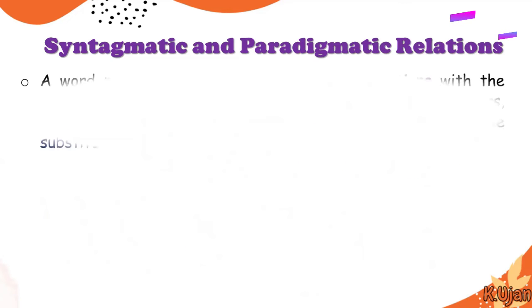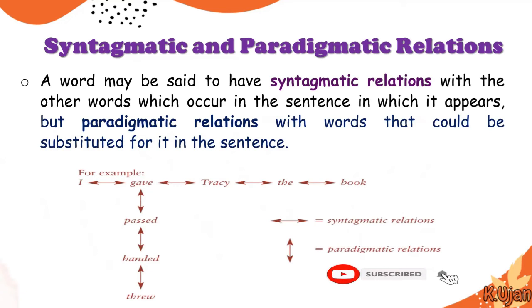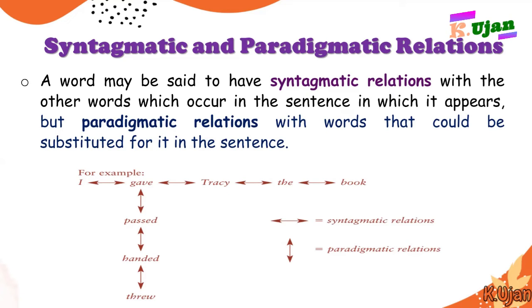A word may be said to have syntagmatic relations with the other words which occur in the sentence in which it appears, but paradigmatic relations with words that could be substituted for it in the sentence. For example: 'I gave Tracy the book' — this is the sequential study of elements of language. But instead of 'gave,' we could say 'I passed Tracy the book,' 'I handed Tracy the book,' or 'I threw Tracy the book.' With just one word substituted, we could make so many sentences. This is the class substitution study in language, known as paradigmatic relations.